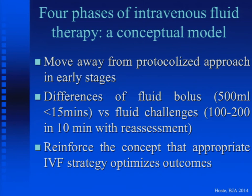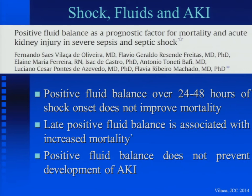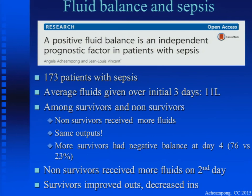Around the three-day mark, mortality starts creeping up with more positive fluid balance — and this was adjusted for disease severity score. These are not patients who got more fluids because they were sicker; they were equally sick but received more fluids. A study by Dr. Vilaca in 2014 showed that giving fluids did not prevent development of acute kidney injury. In 173 sepsis patients given 11 liters over three days, non-survivors received more fluids, while more survivors had a negative balance at day four.